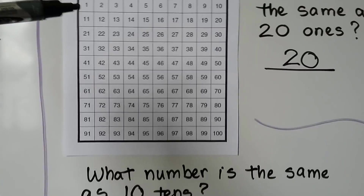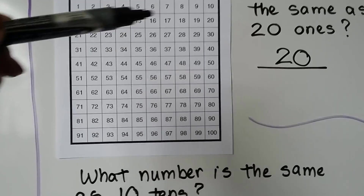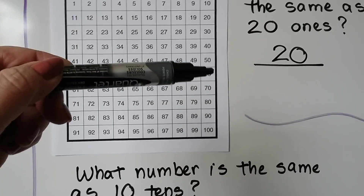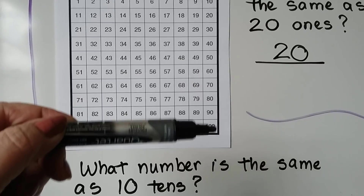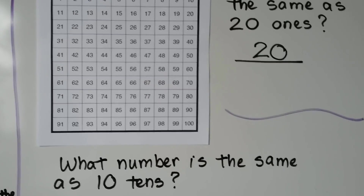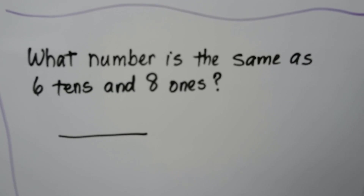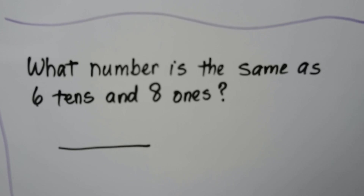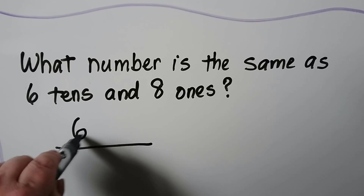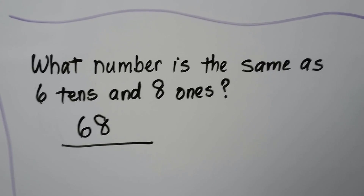We have ten in each row coming across here. That's one, two, three, four, five, six, seven, eight, nine — ten tens is equal to 100. What number is the same as six tens and eight ones? We could put six in the tens place and an eight in the ones place. We'd have sixty-eight.